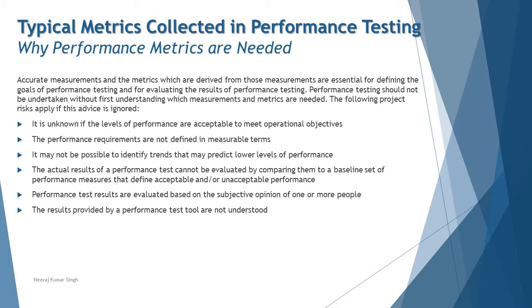Accurate measurements and the metrics derived from them are essential for defining performance goals. We relate things like hits per second, throughput, response time, the interaction between client and server, processing time, number of processes running, resource utilization, RAM, memory leak, and many such things — all of which become metrics. Each one of them has many metrics associated with collecting data during runtime.